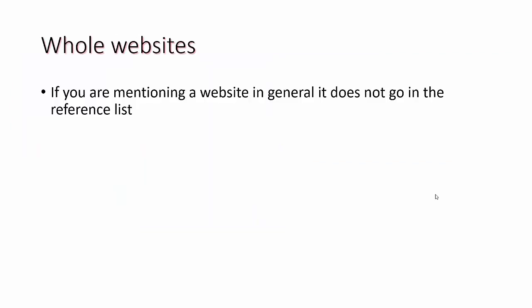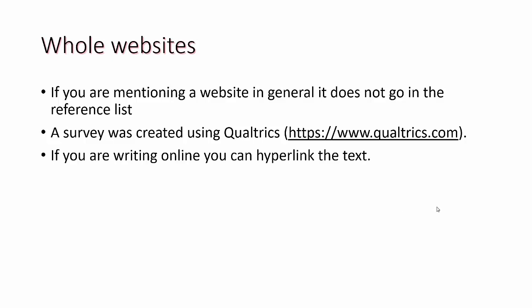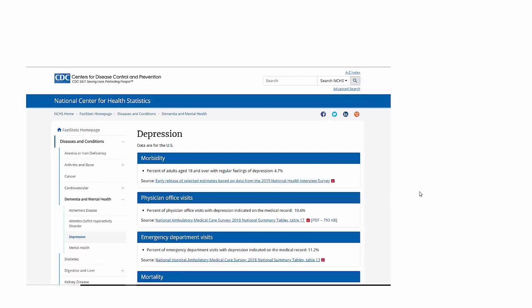If you are mentioning a website in general, it does not go in the reference list and will have the format shown in this example: 'A survey was created using Qualtrics,' followed by the web address from Qualtrics. If you are writing online, you can hyperlink the text, so your example would look like this: 'A survey was created using Qualtrics,' with Qualtrics hyperlinked.